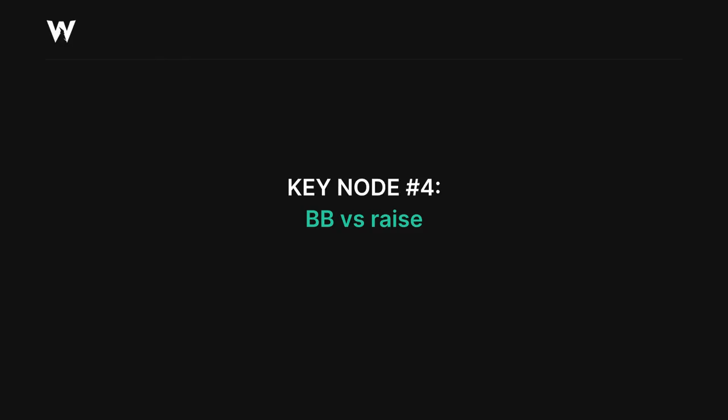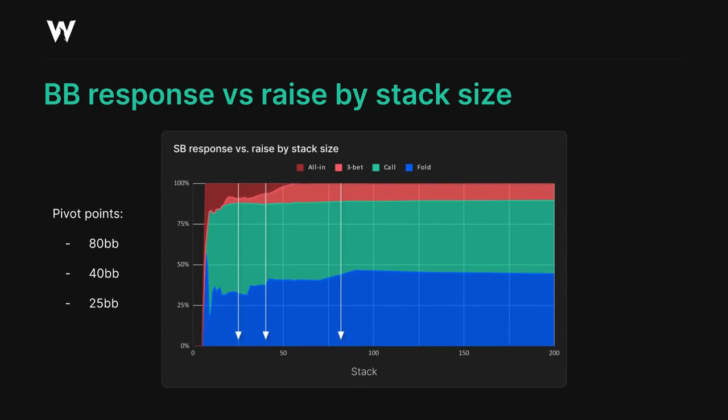Next let's move on to our final key preflop node: the node where the big blind defends against a raise from the small blind. We saw beforehand that raising from the small blind was occurring at a reasonable frequency at all stacks, so it's important that we know how to defend against it. Interestingly, our pivot points for this node are the same as the ones for when we're in the small blind facing a big blind raise after limping, most likely because the SPR is roughly the same at each of these two nodes.